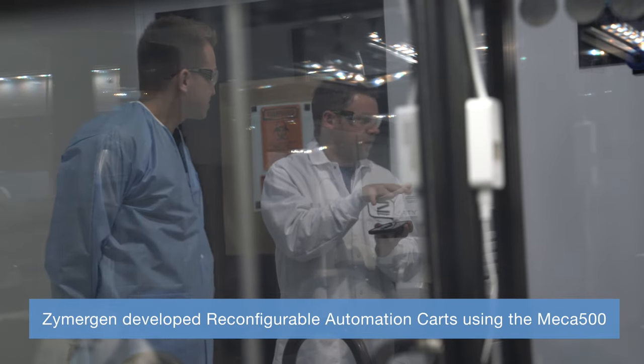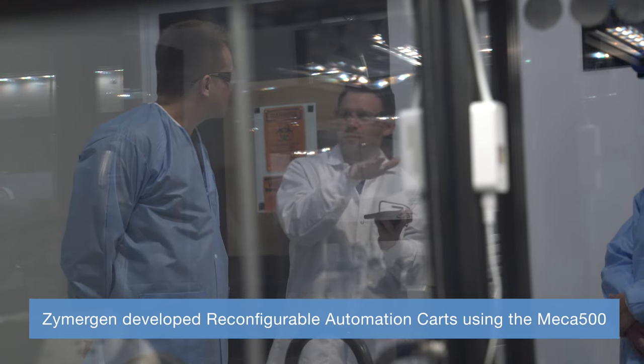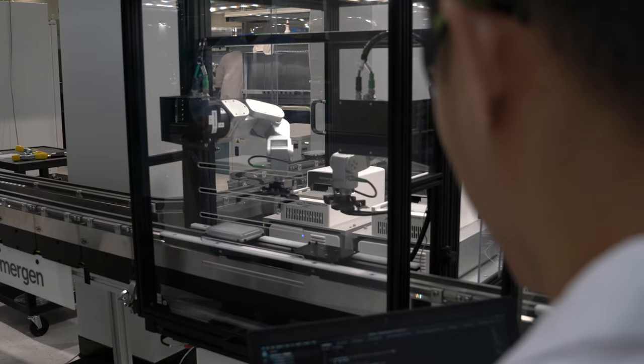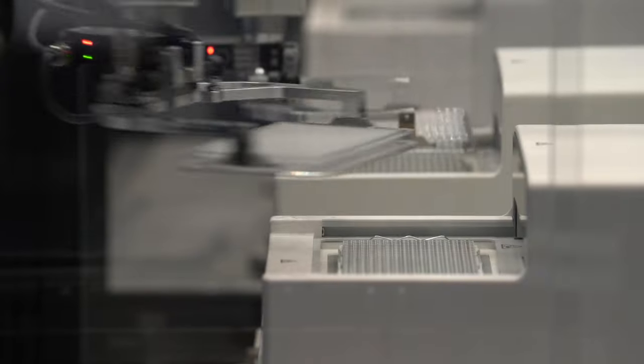So what we've done is we've designed a new system that is more reconfigurable, more modular, and with that it pushed us towards smaller robots that can effectively distribute the throughput payload workload that needs to go on in our system. And we arrived at Mecca 500 because it was a good price, it was very accurate, it really fit the bill for what we're looking for.